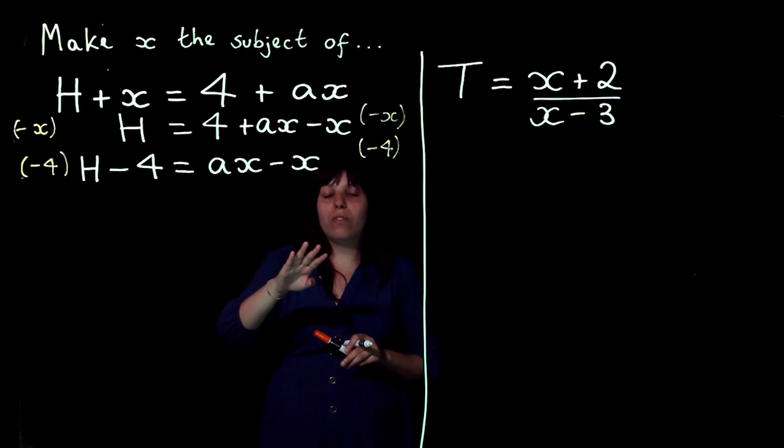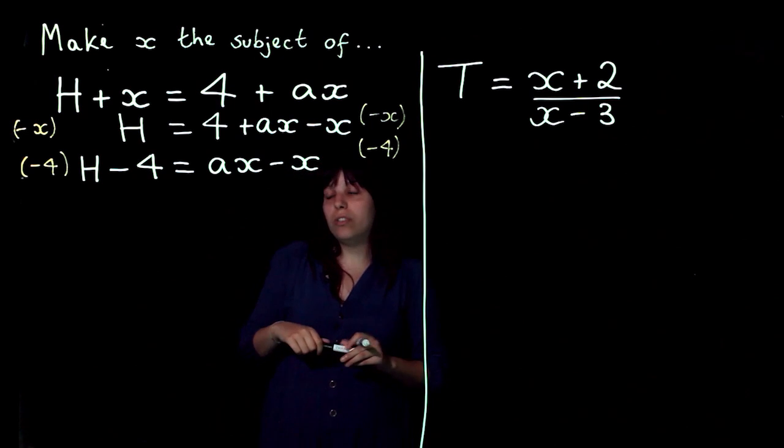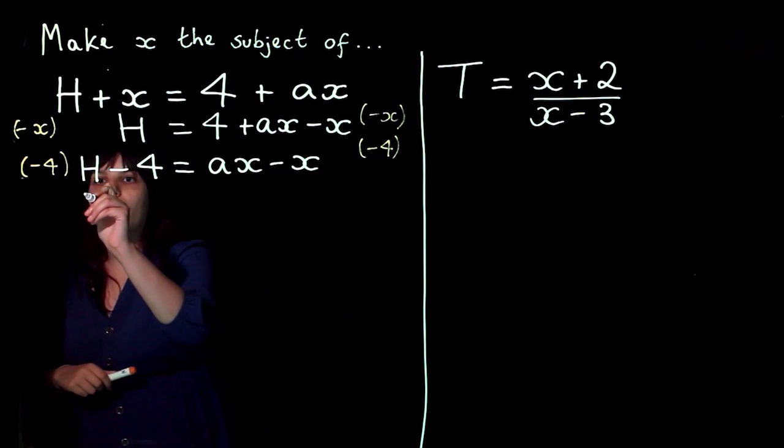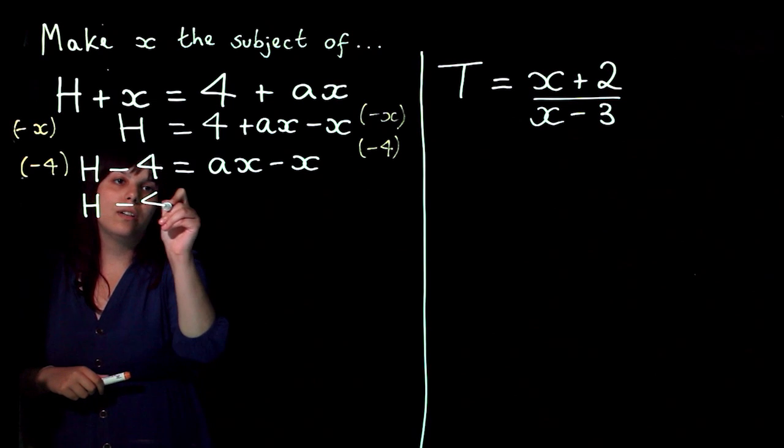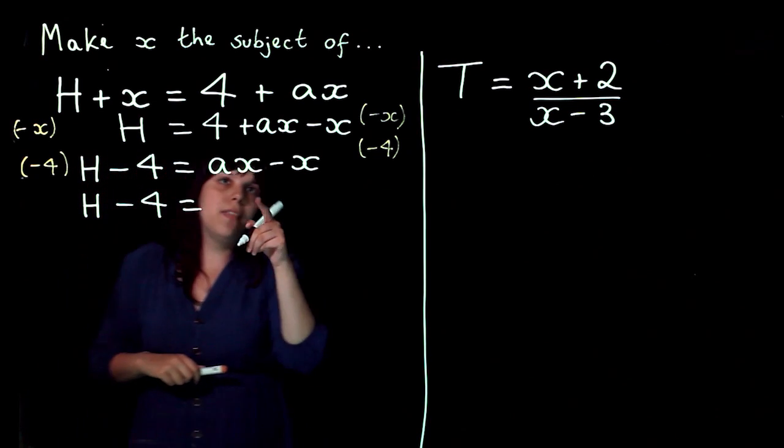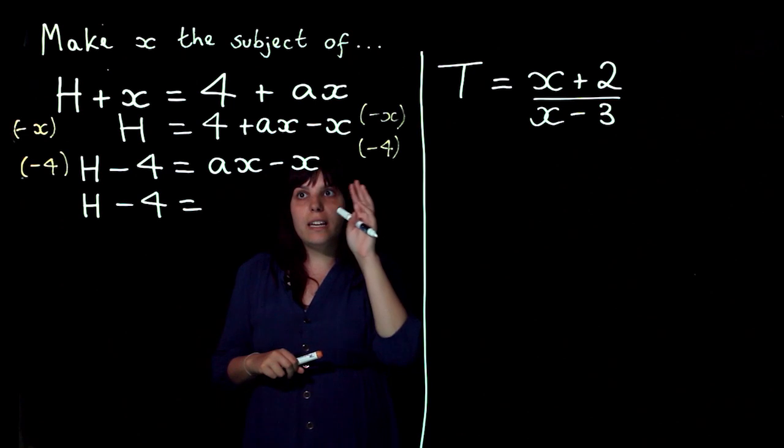And by factorizing, I'm going to take the x out and then I'll end up with just the one x. So this side is not going to change, it's going to stay the same. And then on this side, if I take x out,